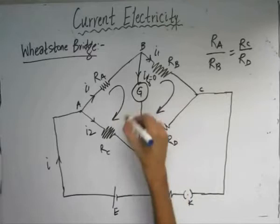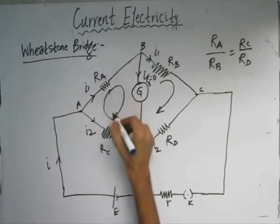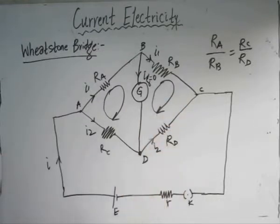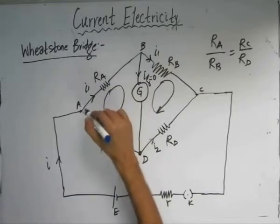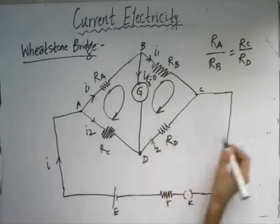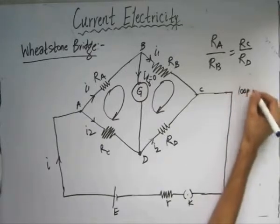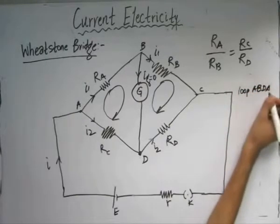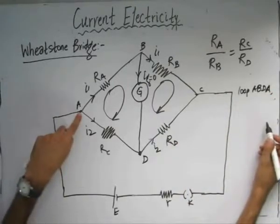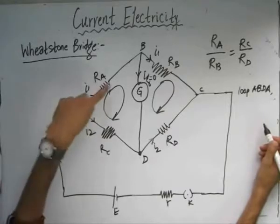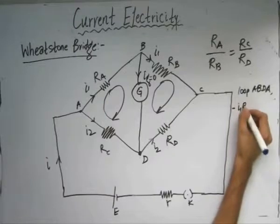We consider these two loops and the direction we will be taking is the clockwise direction. Suppose we start by applying KVL in the loop ABDA. Starting from point A, we can see that the current and the direction of the loop both coincide, so the potential drop would be negative: minus I1 times Ra.